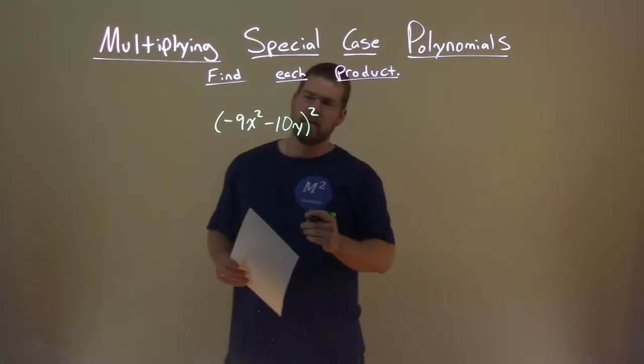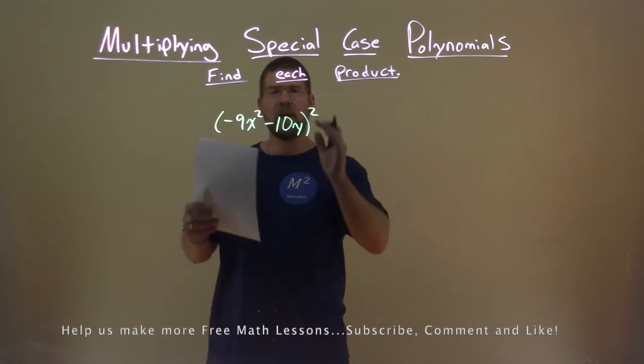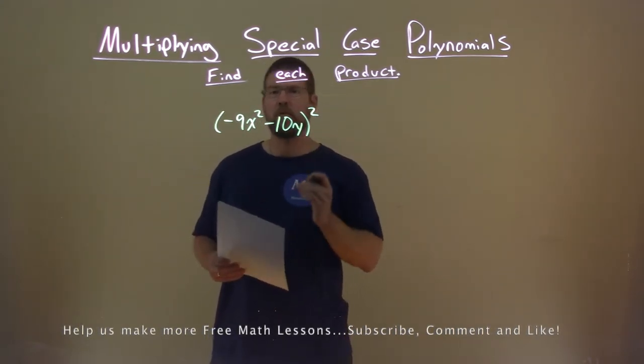We're given this problem right here, minus 9x squared minus 10y, all that is squared, and we want to find the product.